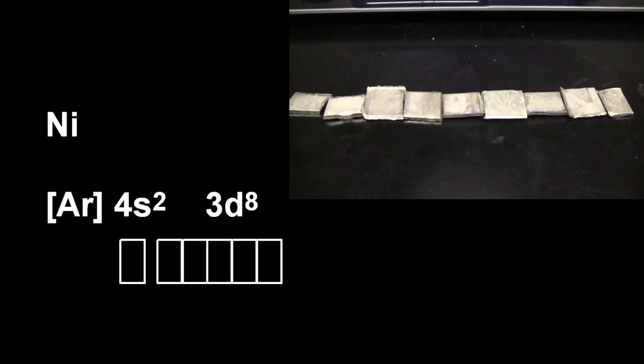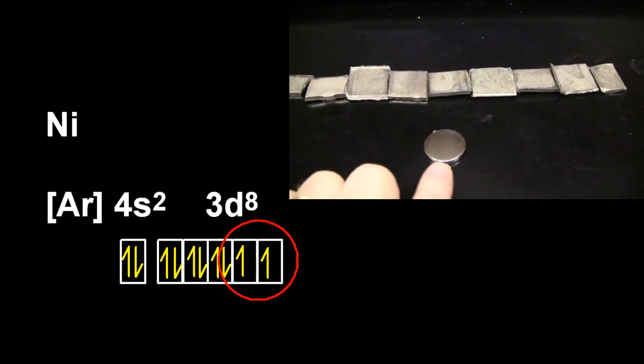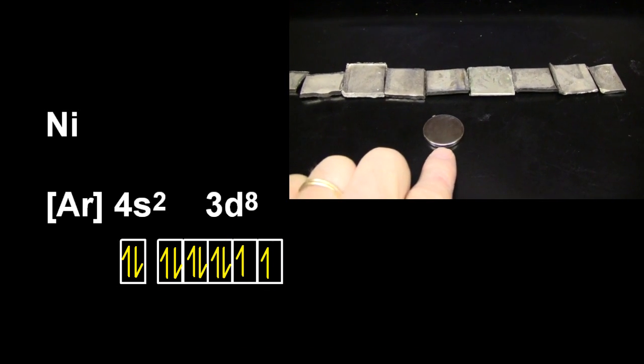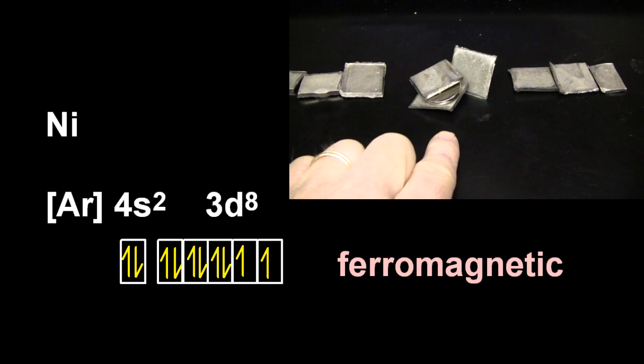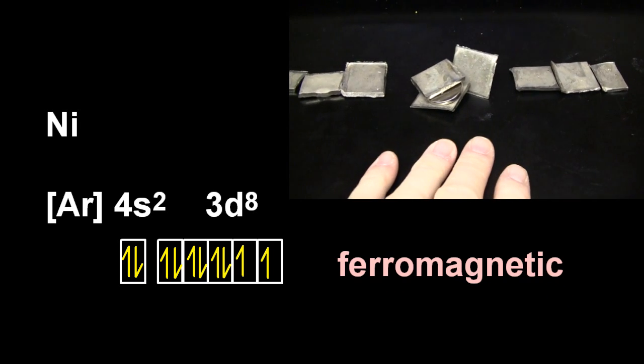And finally, nickel. Nickel has lone electrons. It's paramagnetic. No, no, no. It's ferromagnetic. You have to learn iron, nickel, and cobalt are ferromagnetic. And there are those domains again.